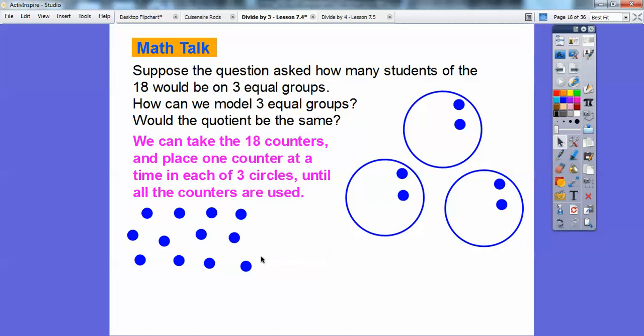So I continue doing this, one counter at a time in each of the three circles. Let me at least even this out. So now they all have three. So I'm going to put the rest of these counters in those circles and it's going to look like this.